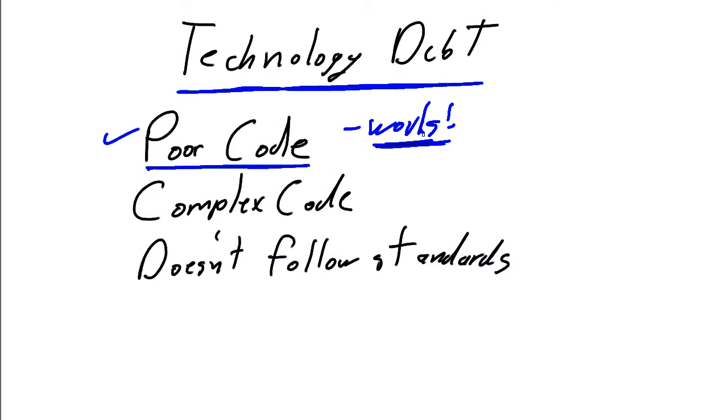So again, often the premise is, why fix something that's not broke? It's working? Well, it is broke. It's poor code. It's complex code. It doesn't follow standards. There can be any of a multitude of reasons why the code that's in our production systems, our functional systems, needs to be fixed from a technology, from a coding standards viewpoint.